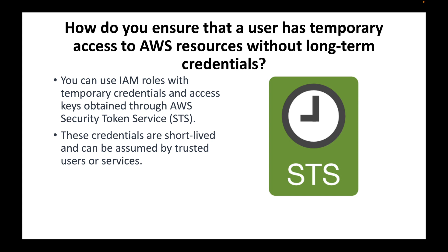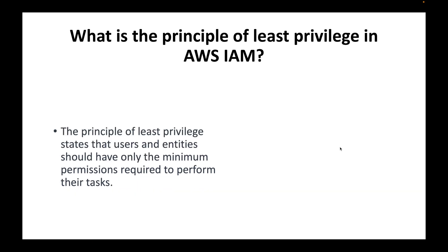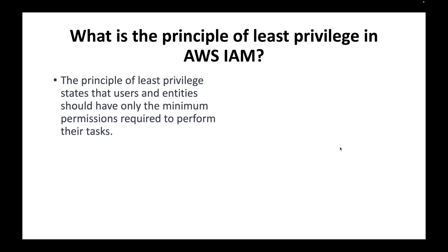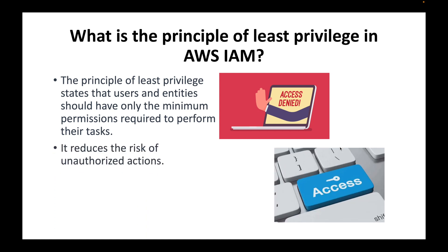The next question is: what is the principle of least privilege in AWS IAM? The principle of least privilege states that users or any entities should have only the minimum required permissions to perform their task. You are limiting their access to only the minimum necessary permissions needed to do their work.